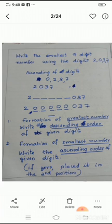Let us conclude what we studied today. Formation of greatest number. How to form a greatest number from given digits? Write the descending order of the given digits. That will make a greatest number.